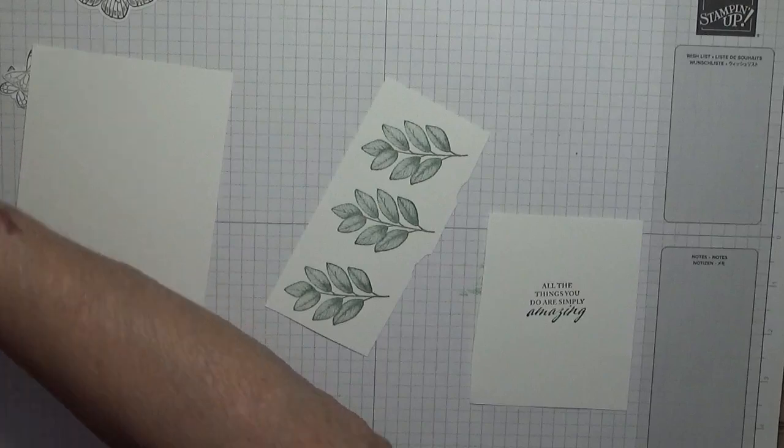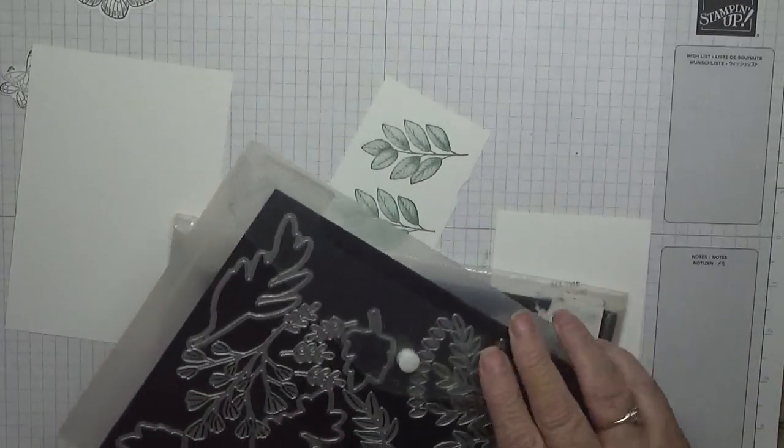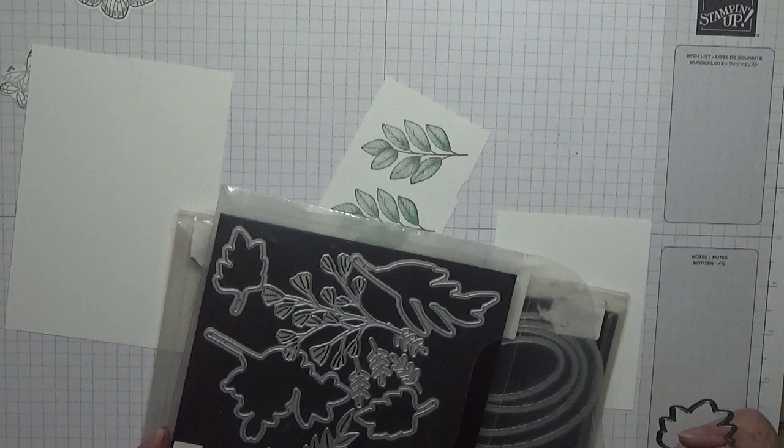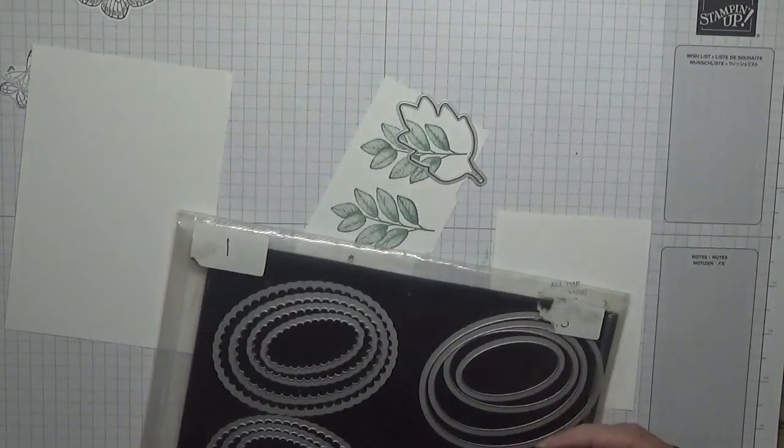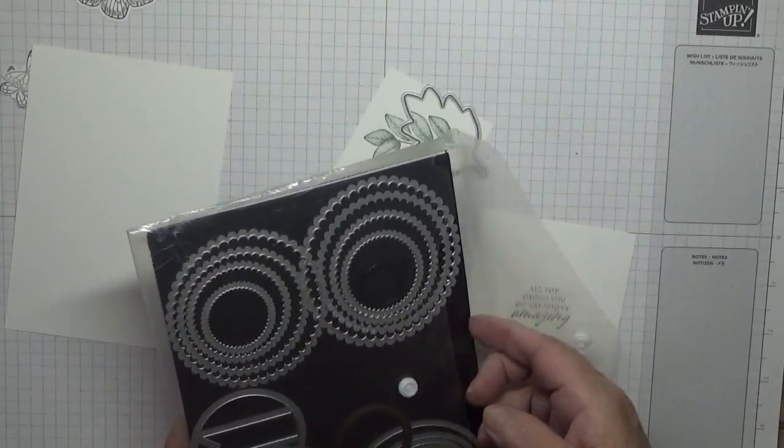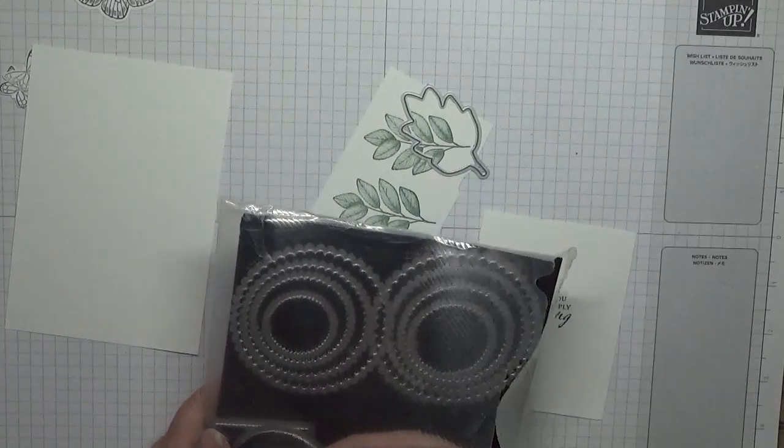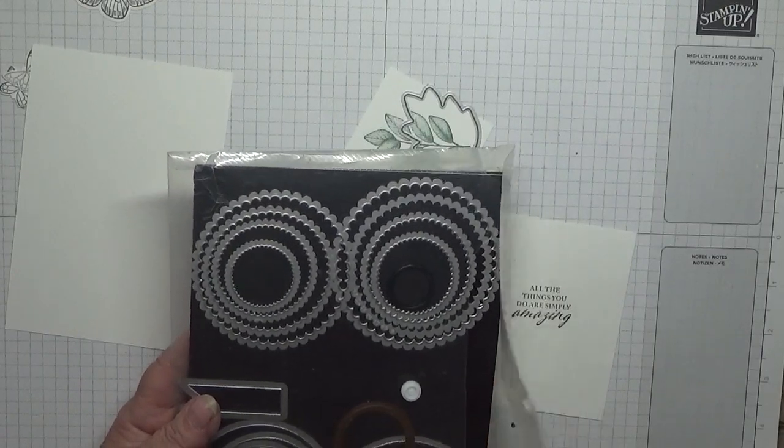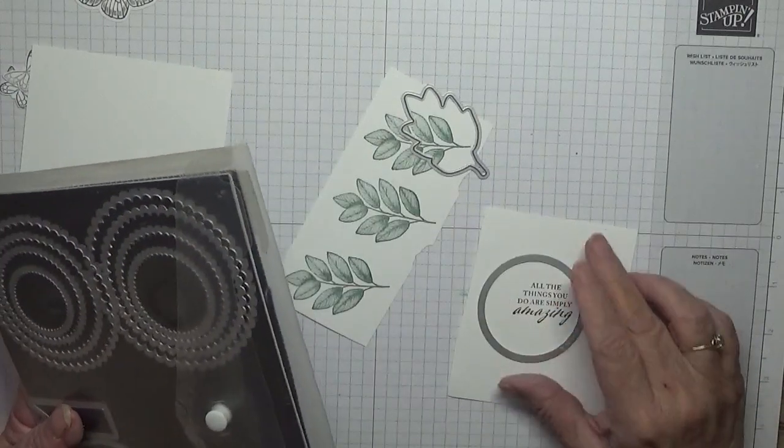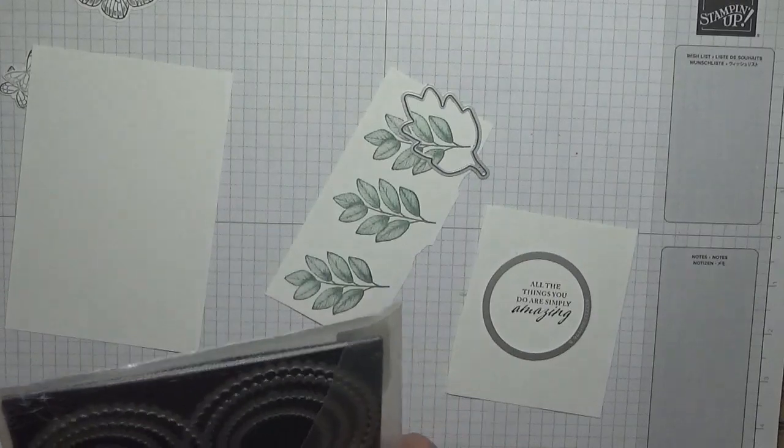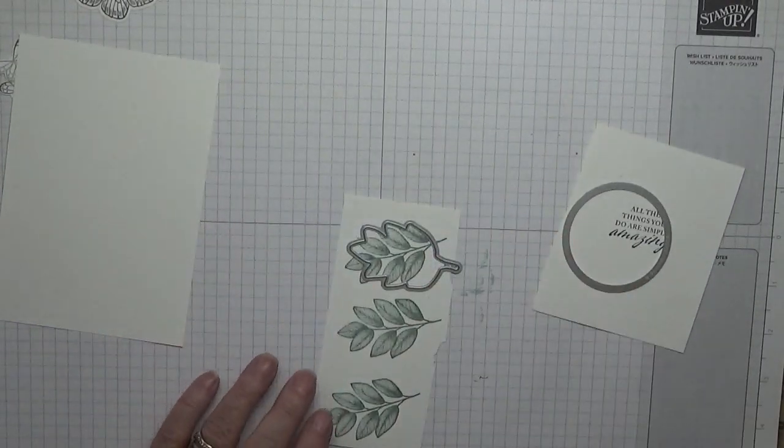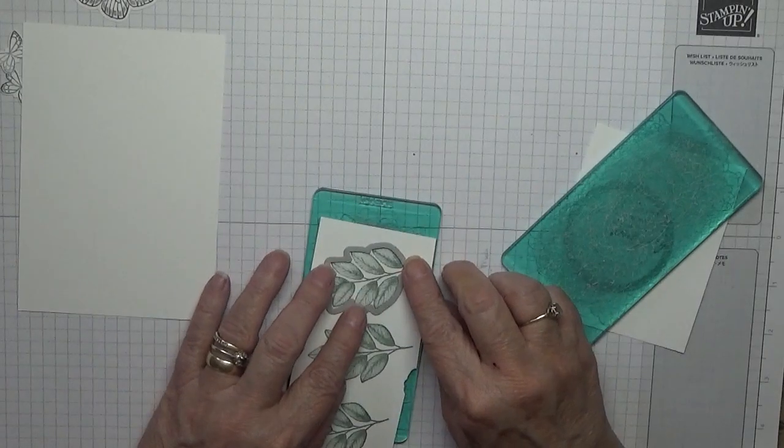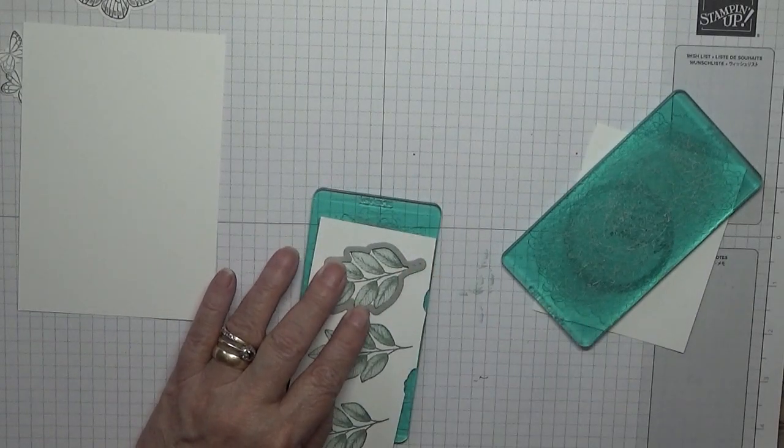All right, we just need to cut these out and I have got here the dies from Forever Fern, Forever Flourishing dies. I'm just using this random one here, it's actually the same size, number four circle. Put it on, put this on, tape it down.